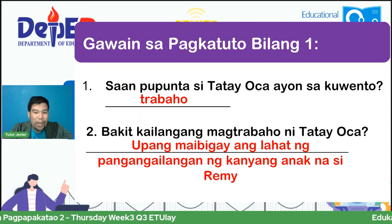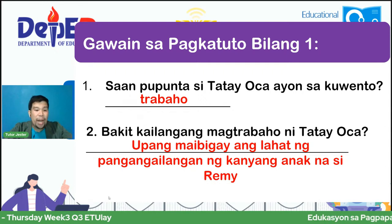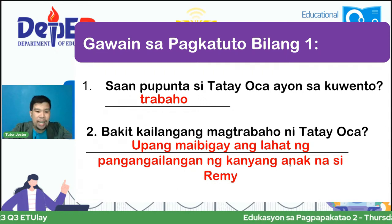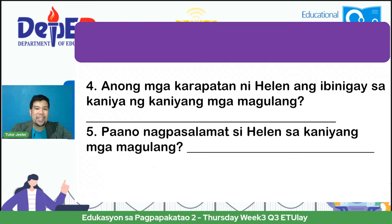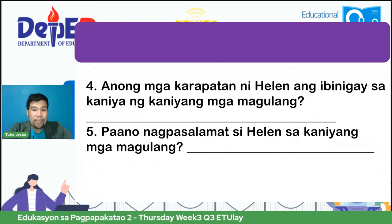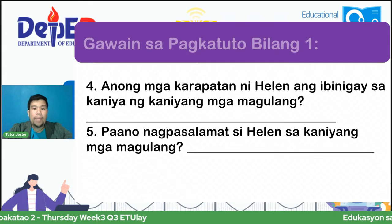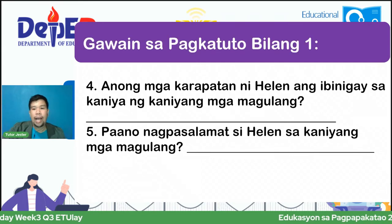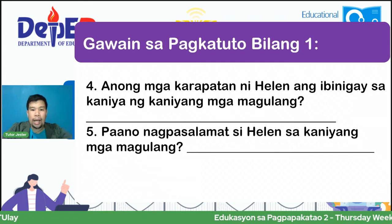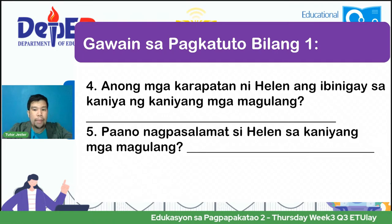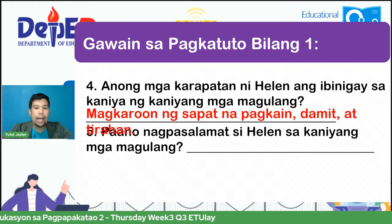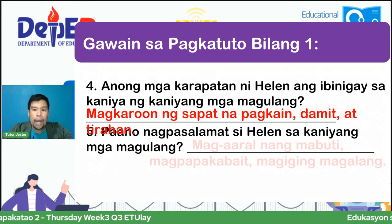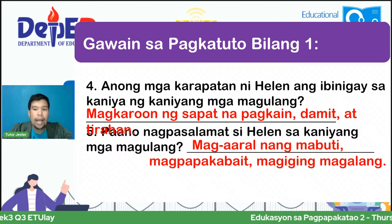ESP2 po ito — Edukasyon sa Pagpapakatao. Number 4 question: anong mga karapatan ni Helen ang ibinigay sa kanya ng kanyang mga magulang? O paano nakapagpasalamat din si Helen sa kanyang mga magulang? Magkaroon ng sapat na pagkain, damit at tirahan. At siyempre, makapag-aral ng mabuti, magpakabait at magiging magalang.